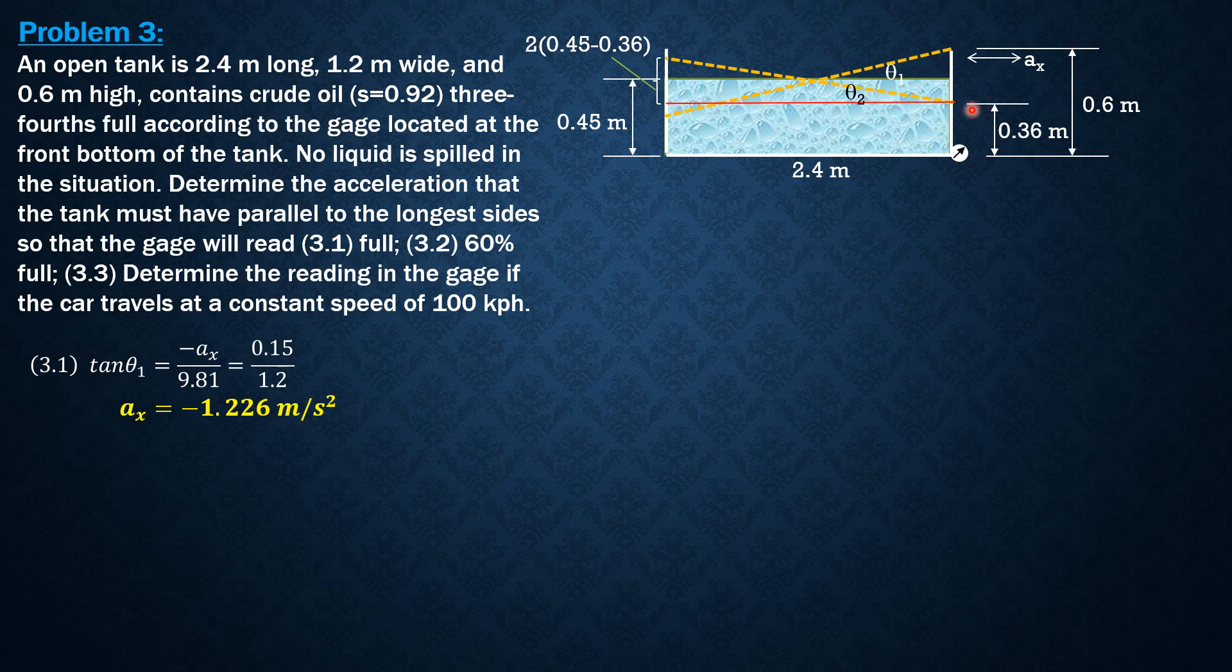And it is equal to this value here, 2 times quantity (0.45 minus 0.36) over this base of right triangle 2.4. So tangent of theta 2 equals Ax over G equals 2 times quantity (0.45 minus 0.36) over 2.4.